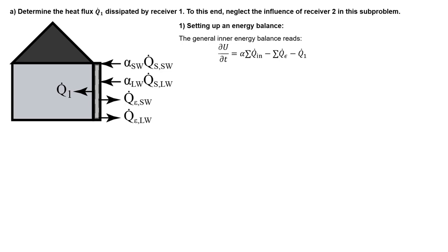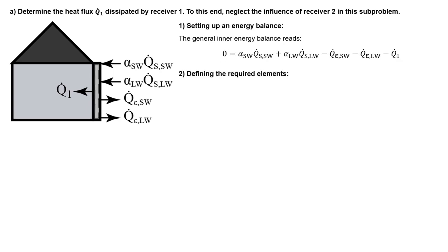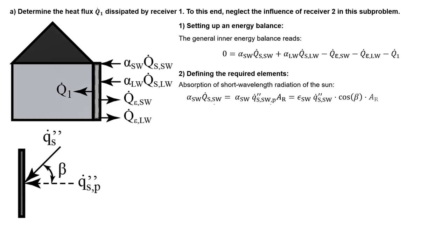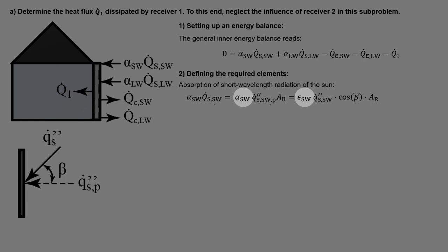If we put these terms into the energy balance, we get the following expression. The first term to define is the short wavelength radiation from the sun being absorbed. This yields from the short wavelength absorptivity multiplied by the solar radiation density being perpendicular to the receiver and the area of the receiver. However, the radiation of the sun is not perpendicular to the receiver area, so we use the irradiation angle and trigonometry to determine the perpendicular component, which yields from the solar density multiplied by the cosine of this angle. From Kirchhoff's law, the short wavelength absorptivity is equal to the short wavelength emissivity.